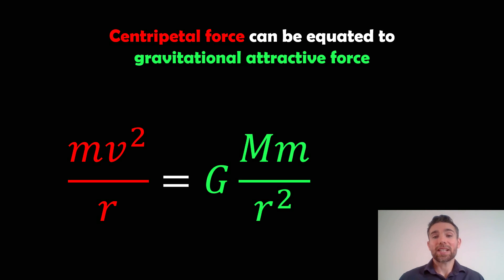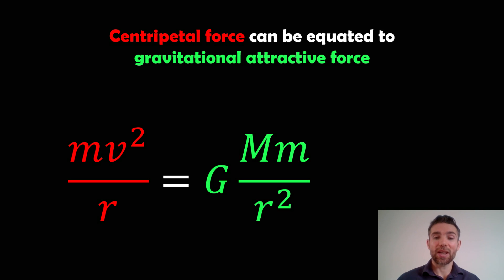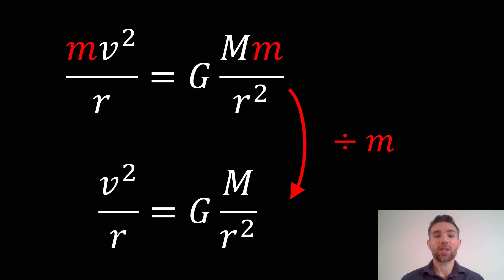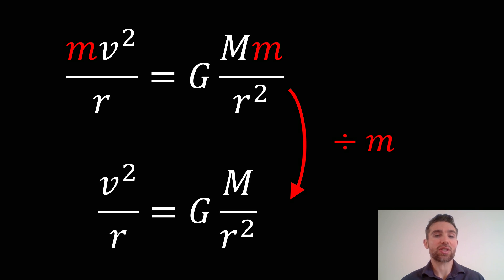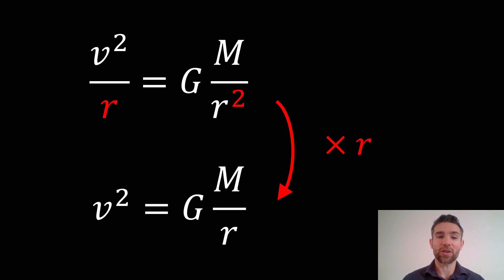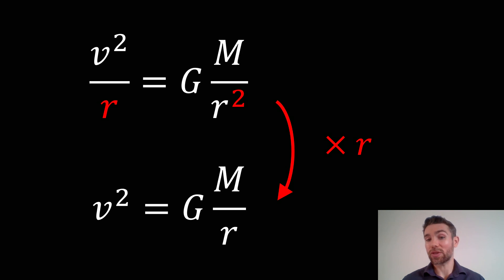Now we can equate that to the gravitational attractive force. So we've got the centripetal force equal to the gravitational attractive force. What we can start to do is rearrange for V to get our orbital velocity. The lowercase m is the mass of Earth, where the uppercase M is the mass of the Sun. We've got that on both sides, so we can divide by m and remove it. Then if we multiply by R, we can remove it from the left-hand side, and remove the square on the other side, so it just becomes over R as opposed to over R squared.